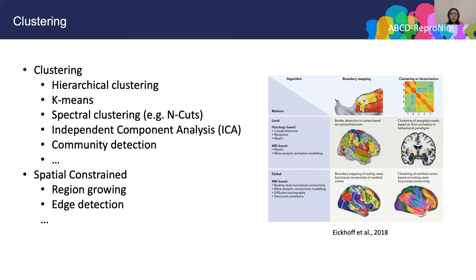To handle this high-dimensional data, the first thing we can think of is to reduce the dimension. Here, unsupervised machine learning techniques — clustering in particular — become very handy. Unlike supervised machine learning, clustering algorithms are data-driven approaches designed to understand the subsystems of the data. In neuroimaging, we refer to this problem as brain parcellation.